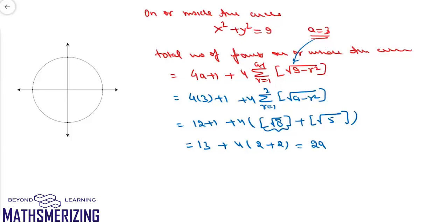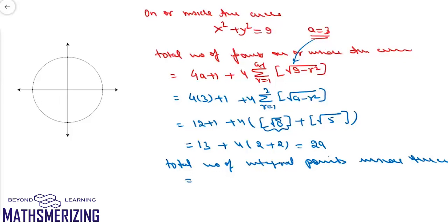Now suppose we need the number of integral points lying strictly inside the circle. We subtract the 4 boundary points: 29 - 4 = 25. We also check whether any expression inside the floor functions is an integer — in this case neither √8 nor √5 is an integer, so no further subtraction is needed. Therefore, there are 25 points with integral coordinates lying strictly inside this circle.